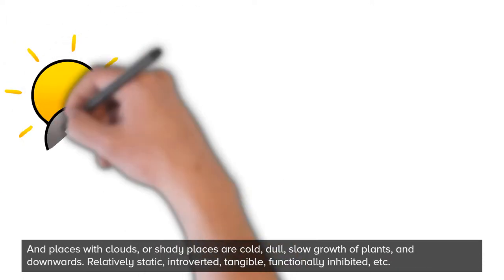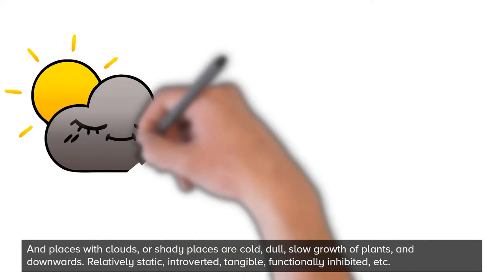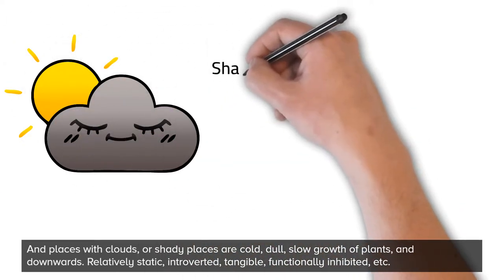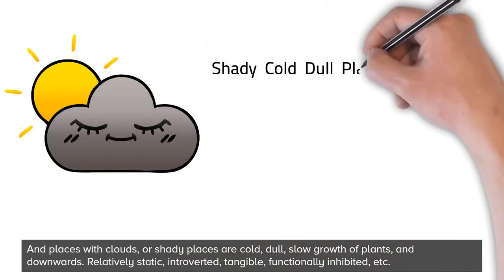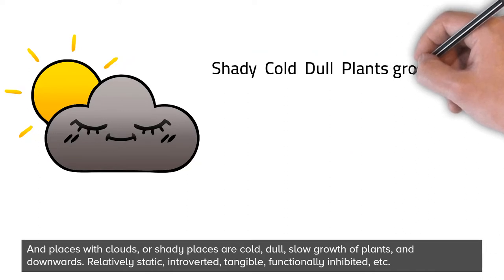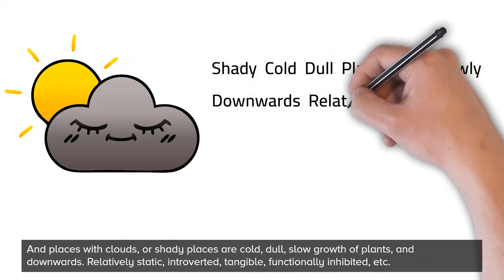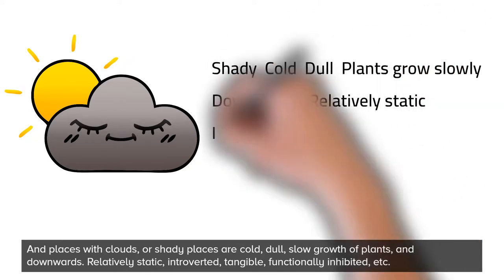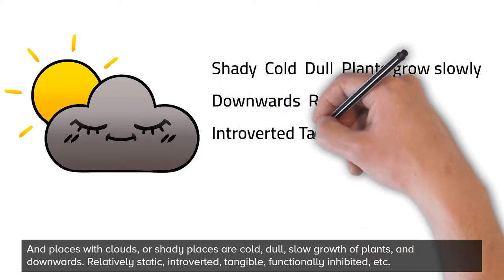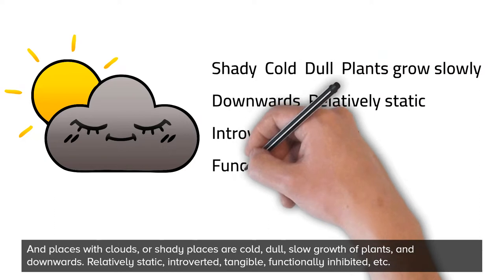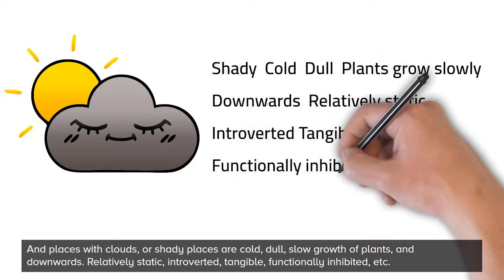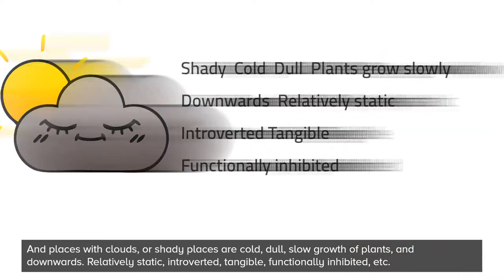And places with clouds, or shady places, are cold, dull, with slow growth of plants, and downwards. They are relatively static, introverted, tangible, and functionally inhibited.